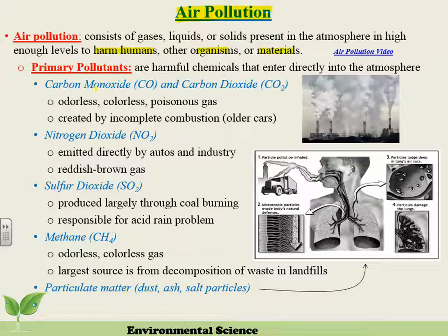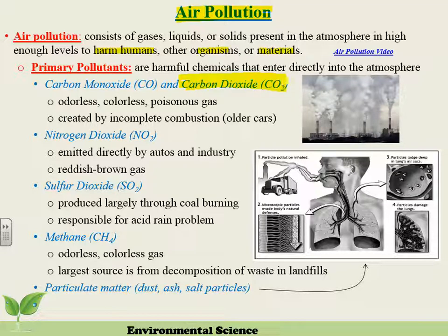Looking at primary pollutants — we'll talk about primary versus secondary — carbon dioxide and carbon monoxide are odorless, colorless gases. CO2 traps heat; we'll talk about the greenhouse effect. It's not the strongest greenhouse gas, but we hear about it a lot because we create so much of it by burning fossil fuels. Then you have oxides, which are really related to autos and industry — burning coal, automobiles, industry — and these oxides create acid rain.